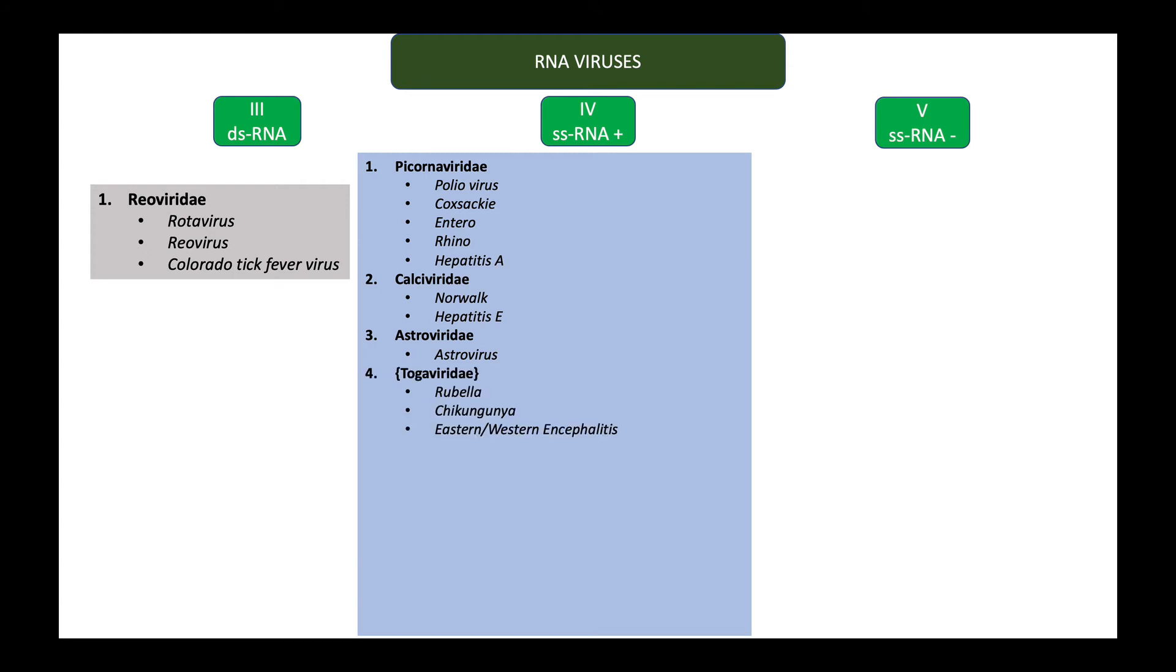Then we have the Togaviridae family which has rubella virus, also known as German measles, significant in pregnancy as it is teratogenic and can cause severe fetal malformations. Chikungunya seen commonly in third world countries and also in India is a cause for fever and arthritis. The arthritis can become chronic in nature.